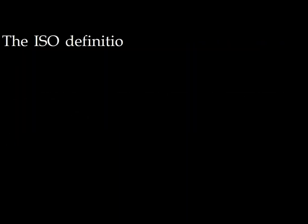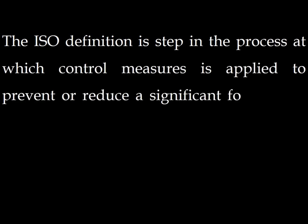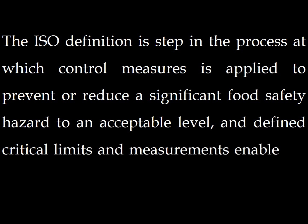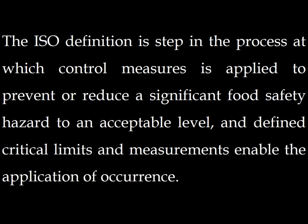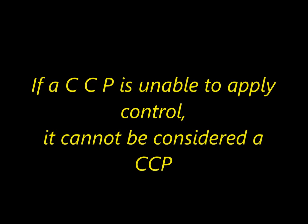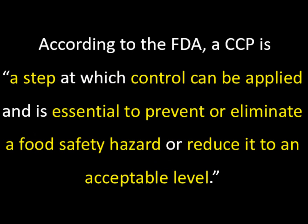CCP: the ISO definition is a step in the process at which a control measure is applied to prevent or reduce a significant food safety hazard to an acceptable level, and where defined critical limits and measurements enable the application of corrective actions. A CCP differs from a control measure as it relates specifically to a step in the process and not a general activity or action. If a CCP is unable to apply control, it cannot be considered a CCP. According to the FDA, a CCP is a step at which control can be applied and is essential to prevent or eliminate a food safety hazard or reduce it to an acceptable level.